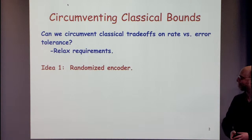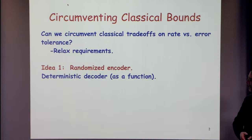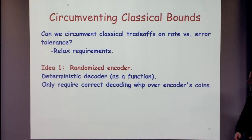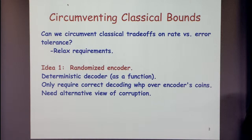If we want to circumvent bounds, of course we have to relax the requirements. The first idea is to use a randomized encoder with a deterministic decoder — deterministic as a function, though it could be a randomized algorithm. We'll only require correct decoding with high probability over the encoder's coins.